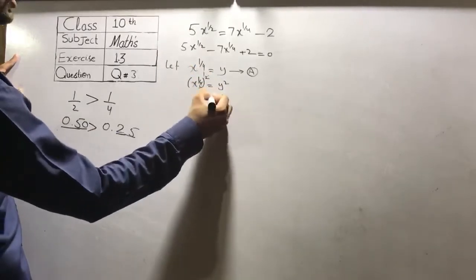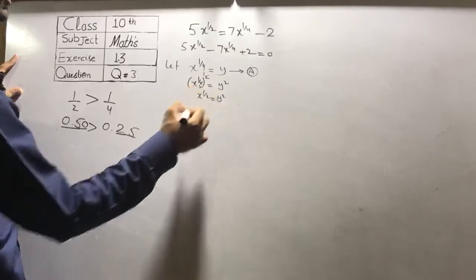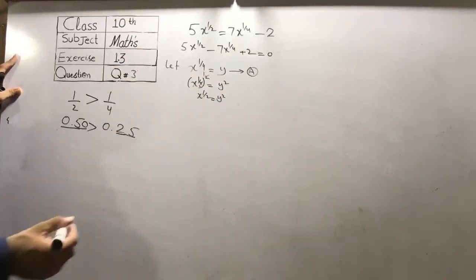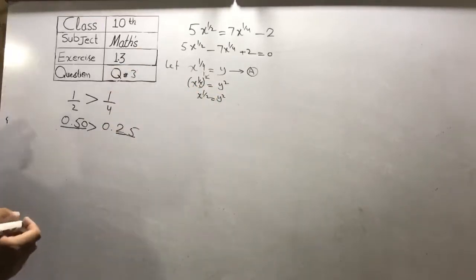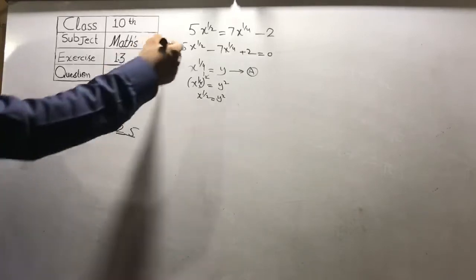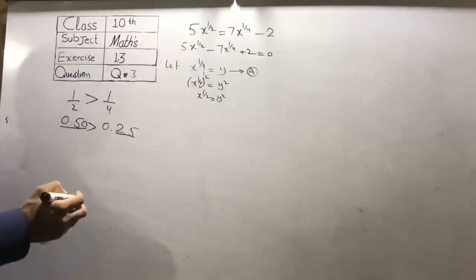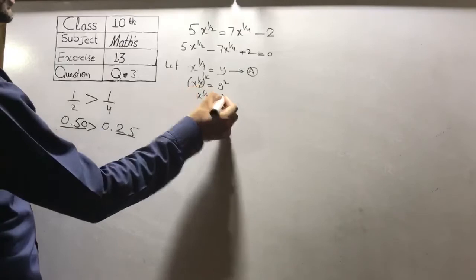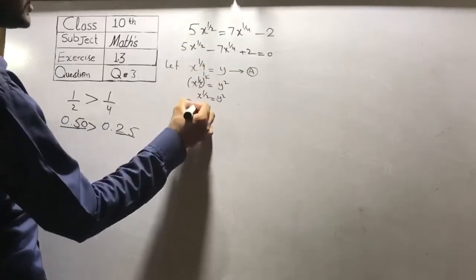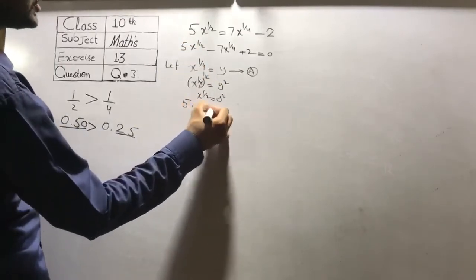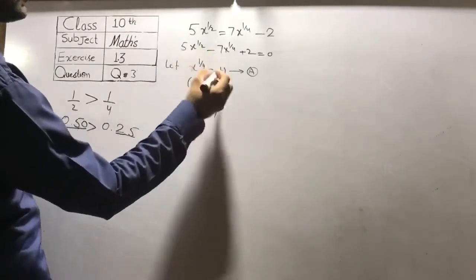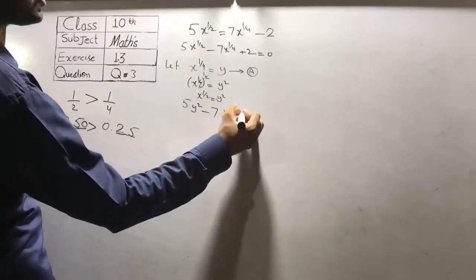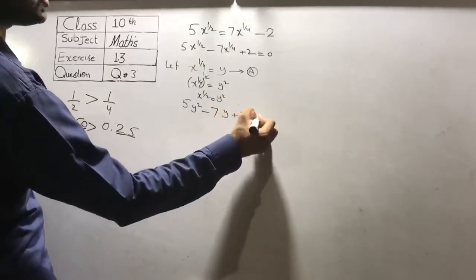Let y squared be equal to x raised to power 1 over 2, and x raised to power 1 over 4 be equal to y. Now we put the values in: x raised to power 1 over 2 becomes 5y squared, and x raised to power 1 over 4 becomes minus 7y, so it becomes 5y squared minus 7y plus 2 is equal to 0.